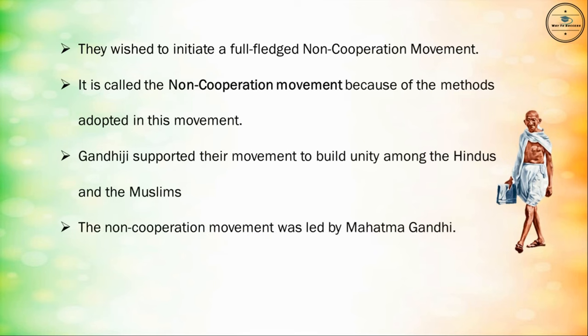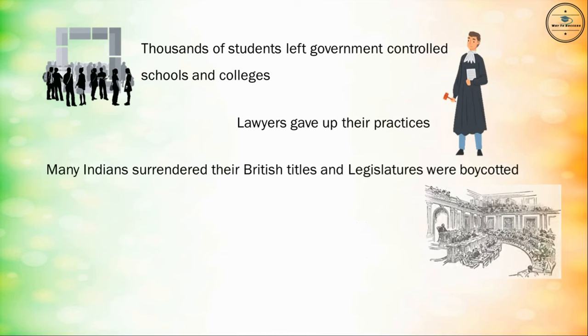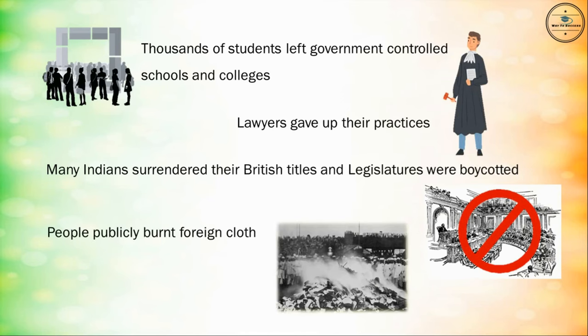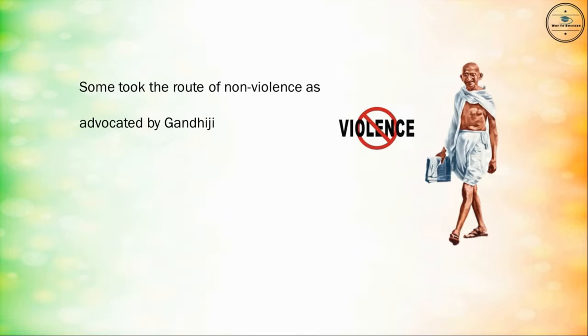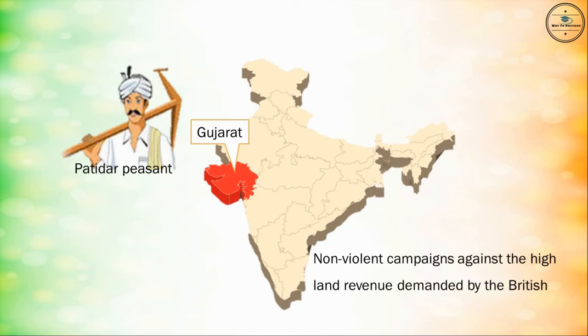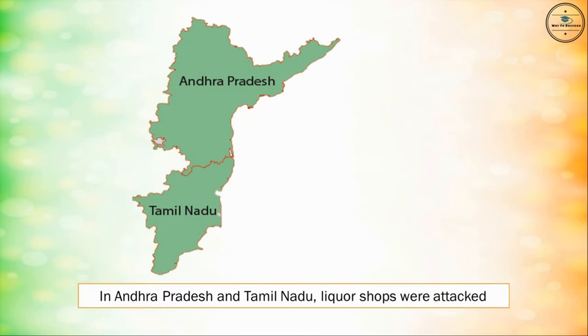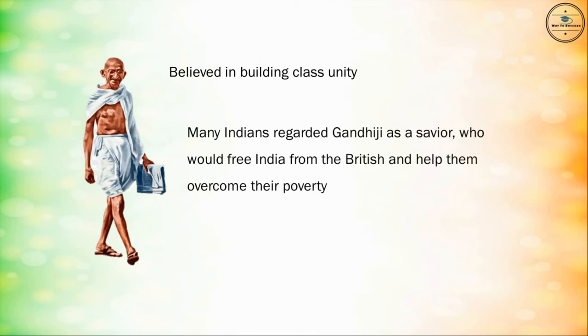The non-cooperation movement was led by Mahatma Gandhi. During 1921 and 1922, the movement gained momentum. Thousands of students left government-controlled schools and colleges. Lawyers gave up their practices. Many Indians surrendered their British titles, and legislatures were boycotted. People publicly burnt foreign cloth. People from all walks of life joined the movement for Swaraj or self-government. Some took the path of non-violence as advocated by Gandhiji, while others protested in their own way. The Patidar peasants of Gujarat organized non-violent campaigns against high land revenue demanded by the British. In Andhra Pradesh and Tamil Nadu, liquor shops were attacked. Gandhiji believed in building class unity, and many Indians regarded him as a saviour who would free India from the British.